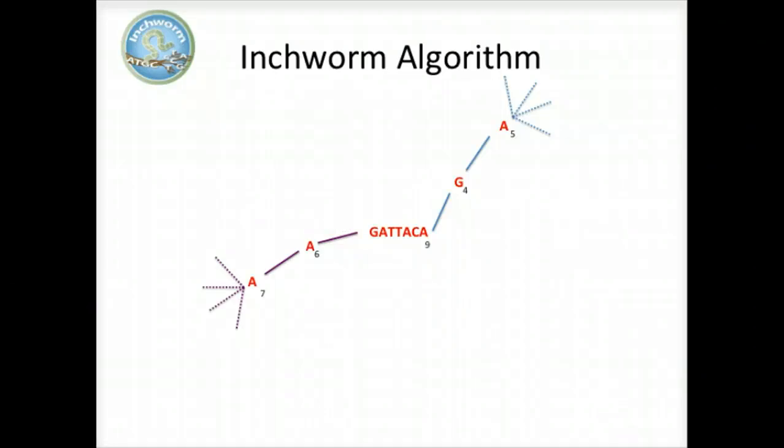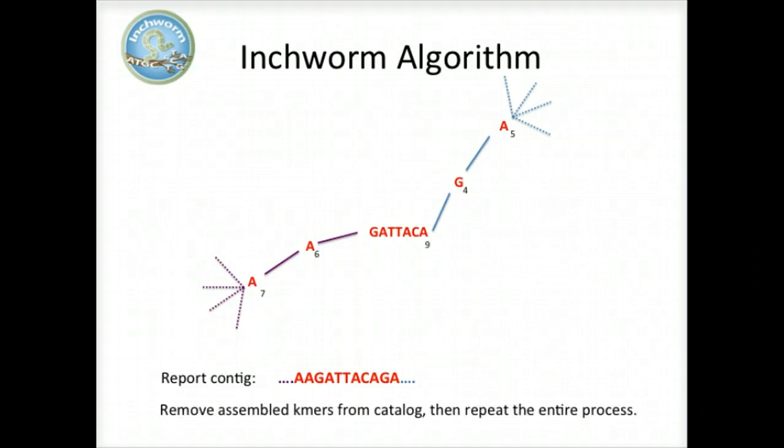Once the extension completes, the assembled contig is reported. The k-mers found in this contig are removed from the k-mer catalog, and the entire process is repeated starting from a new seed. The Inchworm assembly ends when the entire k-mer catalog has been depleted.